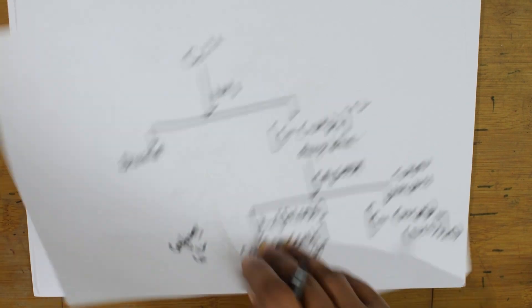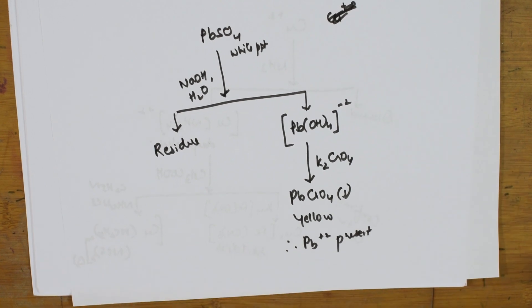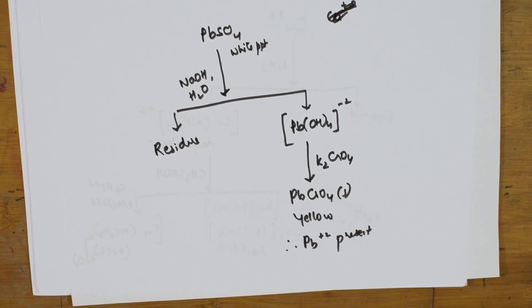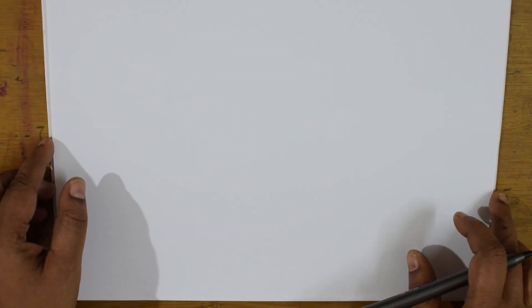We have done so many streams. We have seen the flowchart separately for everything. Understand carefully, nothing to get confused. Group 2 cations, let us see what are the reactions which are involved.